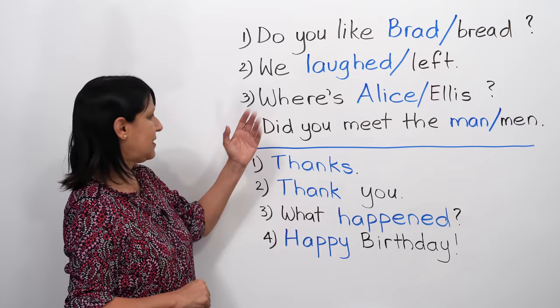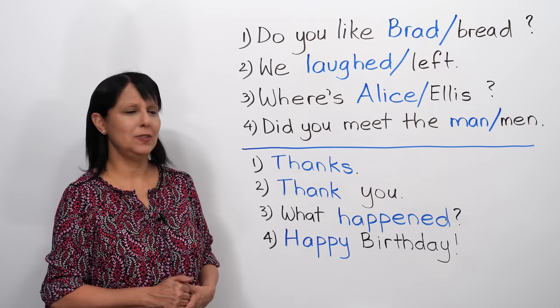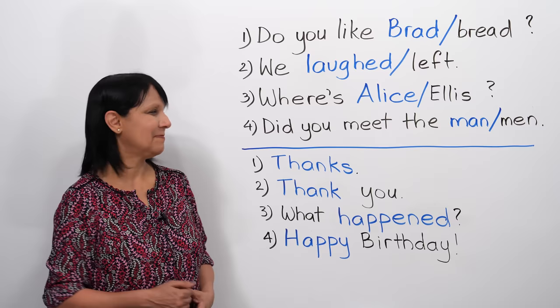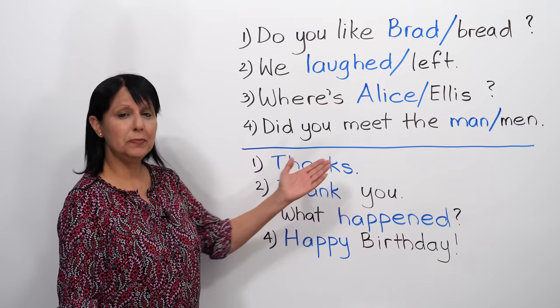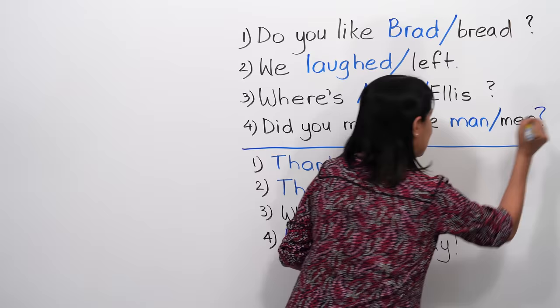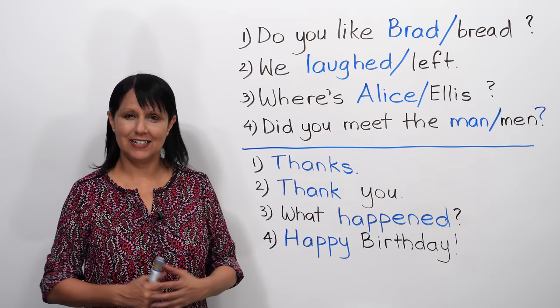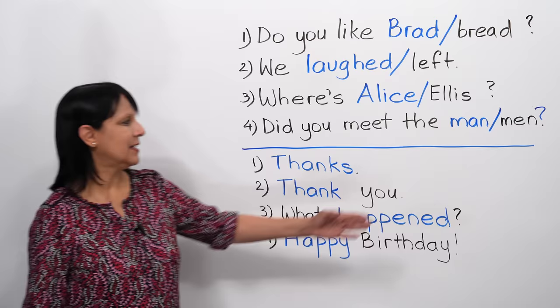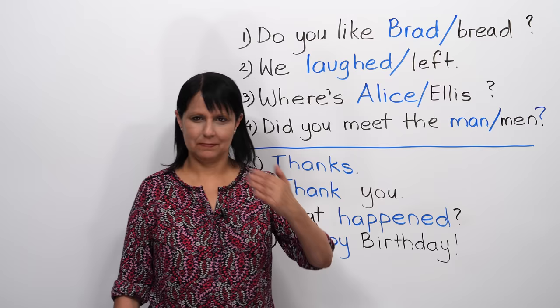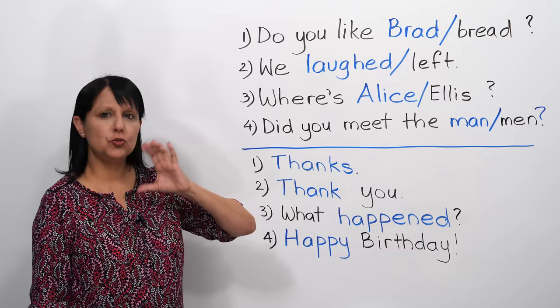Number three. Where's Alice? Where's Ellis? Where's Alice? Next. Did you meet the man? We forgot a question mark. Let's do it again. Did you meet the man? Good. Did you meet the men? Good. Man, men. That's how you can differentiate between these sounds.